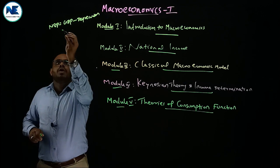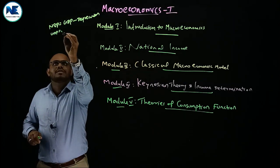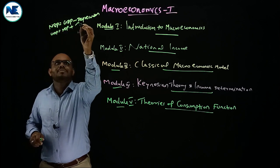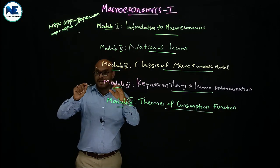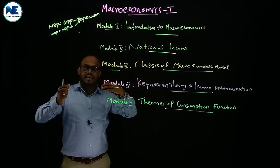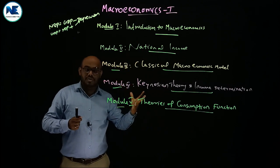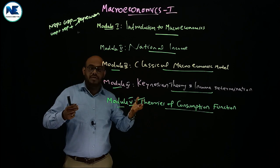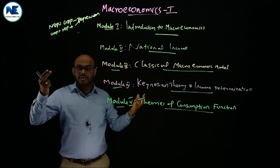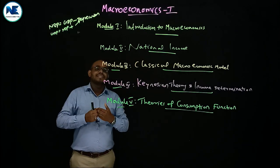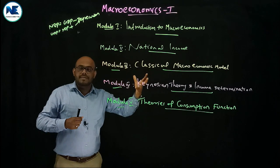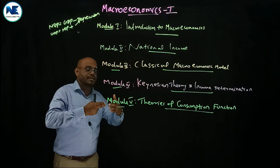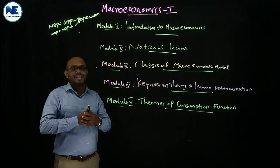GDP (gross domestic product) equals NDP plus depreciation. Key concepts include NDP, GNP, NNP, GDP at factor cost, GDP at market cost, national income at current price, national income at constant price — real income — and nominal income. Module 2, national income, is very very important.